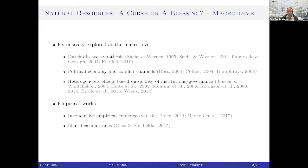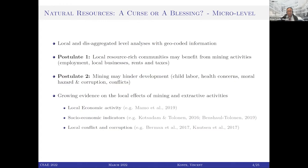There has been a huge literature on whether natural resources are a curse or a blessing, especially at the macro level — covering Dutch Disease, political economy and conflict channels, and heterogeneous effects based on quality of institutions. However, this macro-level literature has led to inconclusive empirical evidence. In recent years, there has been a growing focus on micro-level analysis using geocoded local data, generating evidence on the local effects of mining on economic activity, socioeconomic indicators, education and health outcomes, and local conflict and corruption.